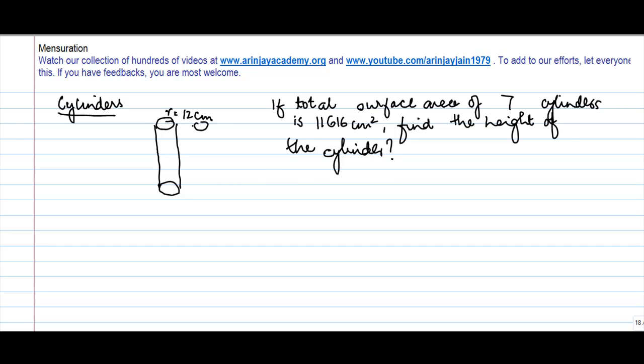So what we are told is that there are 7 identical cylinders. Here is 11,616 cm², find the height of the cylinder.